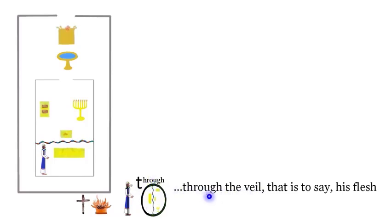Through the veil is how this verse begins. You can think of the high priest drawn on a one, with the voice lines for, that is to say, and Jesus on the Hebrews icon cross, for his flesh.